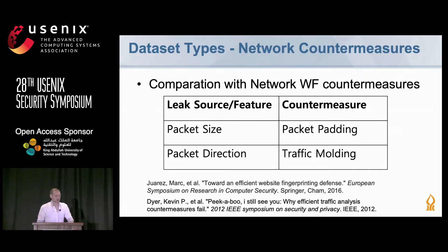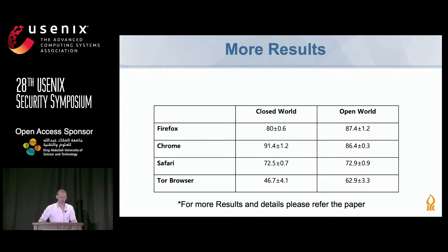We also compared against network fingerprinting countermeasures to see their effect. Network countermeasures aim to minimize leakage from packet size and direction features, using packet padding and traffic shaping to drop classifier accuracy to base rate. Our results: in closed-world, accuracy ranged from 72–90% on regular browsers and 72–87% in open-world. For Tor Browser, we achieved 46% in closed-world and 62% in open-world. We have many more results in the paper.